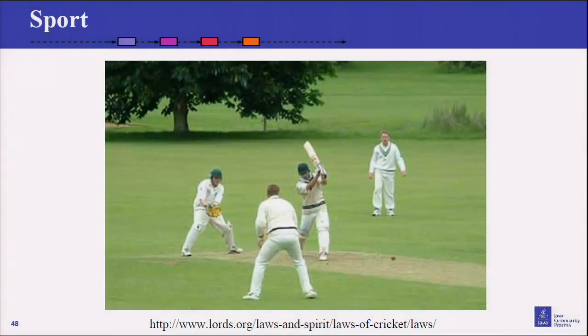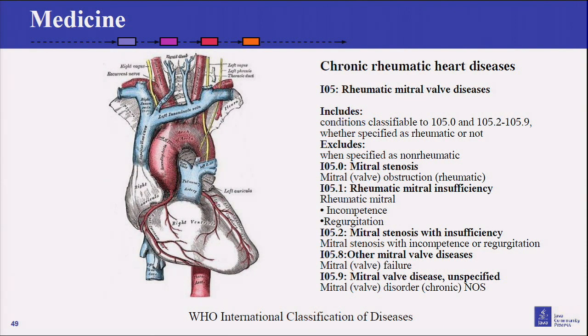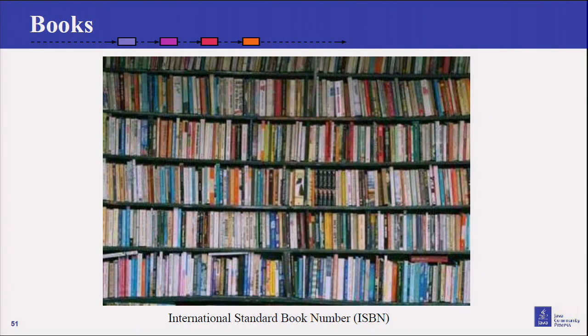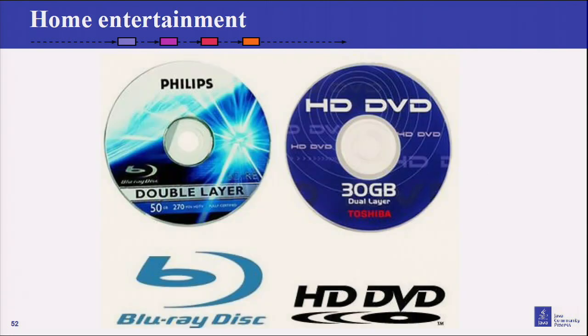Sport: I don't know about an American football pitch, but I can tell you a cricket pitch is one chain in length — remember, a chain is four rods, 22 yards. You've got to have rules, otherwise the game doesn't mean anything. There is a formal standard for the rules of cricket. Medicine: we've got to agree on what we call a disease — World Health Organization classification. Shopping: barcodes, and specialized barcodes for books — ISBN. Home entertainment systems: another standards war. We know who won this one — Blu-ray with Java inside, yay. Beta out, HD DVD.